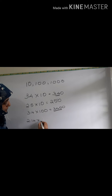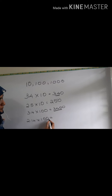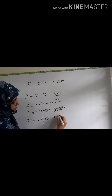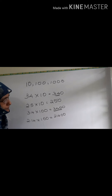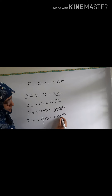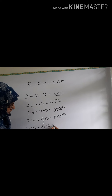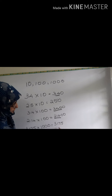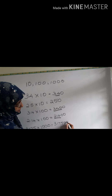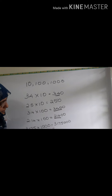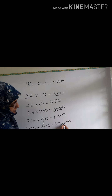Take 2.14 into 100. Remove the decimal and multiply — you get 21400. After the decimal there are 2 digits, so count 2 digits from the right. The answer is 214. Then, 3.175 into 1000: write 3175 and insert three zeros, giving 3175000. After the decimal there are 3 digits, so count 1, 2, 3 from the right. The answer is 3175.